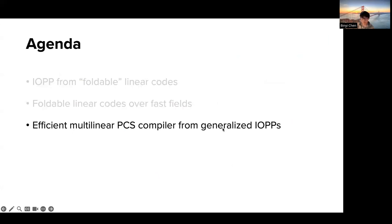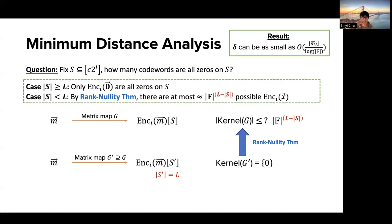Q: How do you pick parameter c? A: Parameter c is just the rate of the encoding scheme — it determines the ratio of message space to block length. You need c large enough to have sufficient space for errors. In our setting, c is typically around 8 — definitely more than 4.